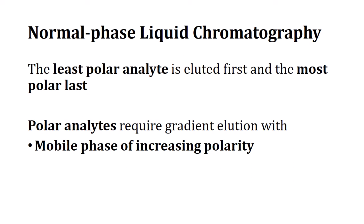If there are five analytes in increasing order of polarity, analyte number one elutes first and analyte number five elutes last. We can apply gradient elution using mobile phases of increasing polarity so that when the polarity of the mobile phase approaches that of the stationary phase, even the most polar analytes will elute.